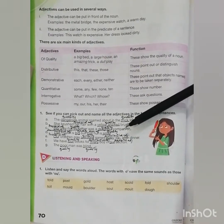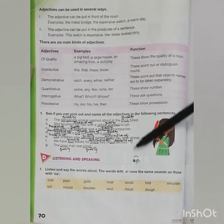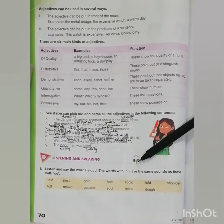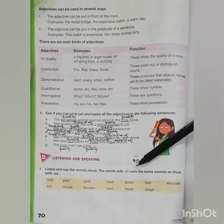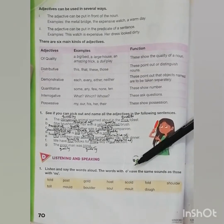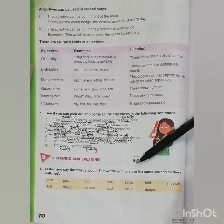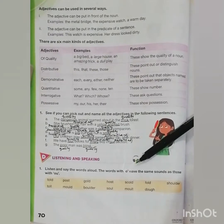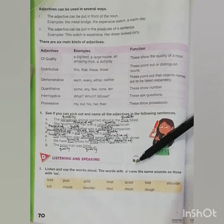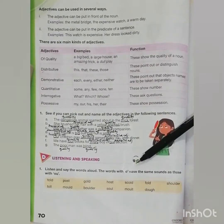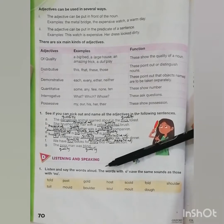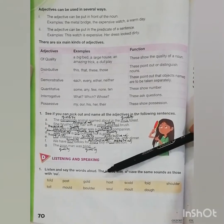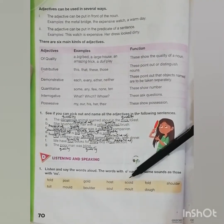You can do this by your own. Here is Part D: listening and speaking. Question number one: listen and say the words aloud. The words with O have the same sounds. Towels, post, gold, host, scold, fold.